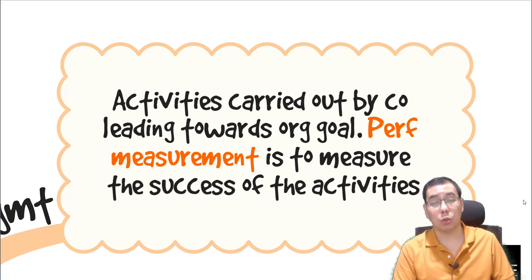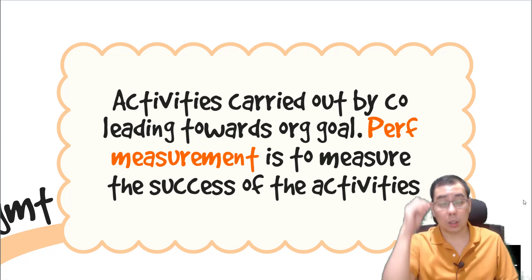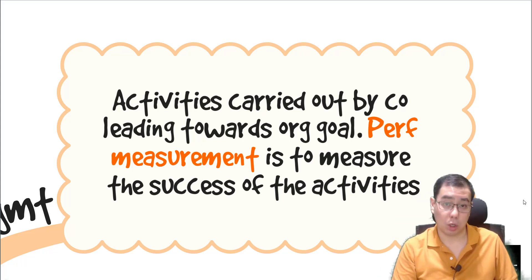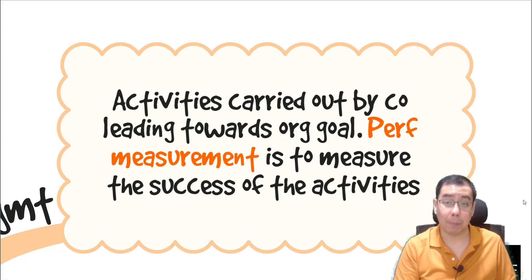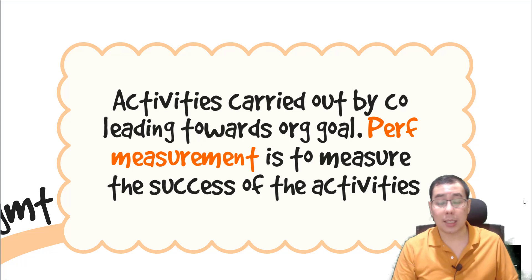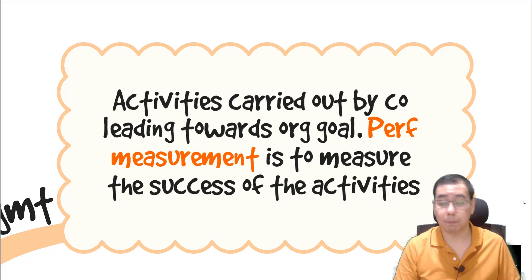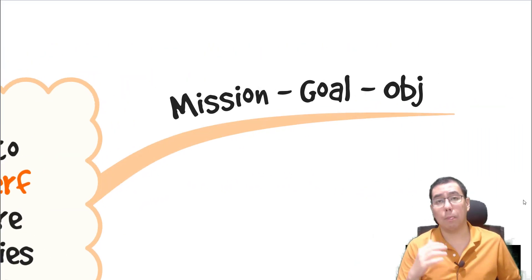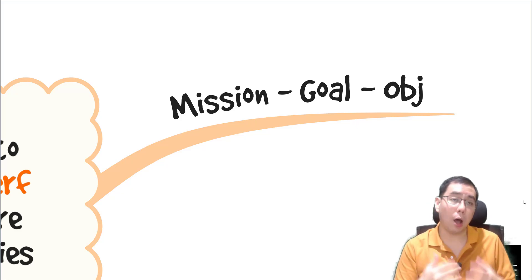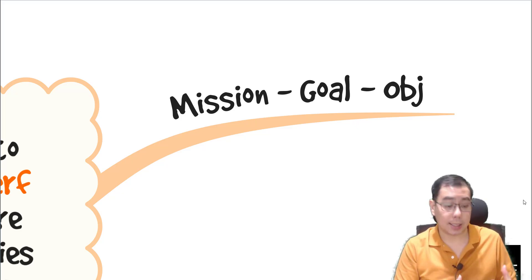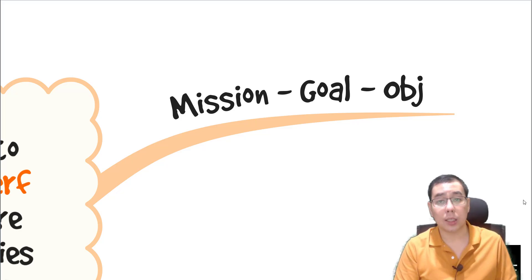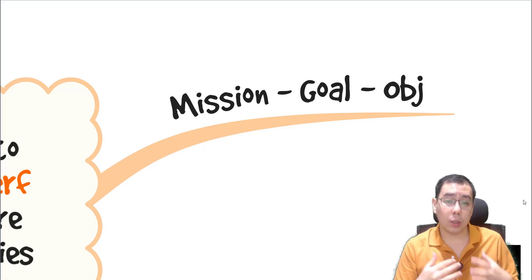How do we know whether we are working towards the organization goal? It's all about carrying out performance measurement. Performance measurement is always in the question requirement for APM. Basically, performance measurement is all about measuring the success of the activities that you are carrying out within your performance management. So when we measure performance, it's about identifying the success of activities carried out by your company.